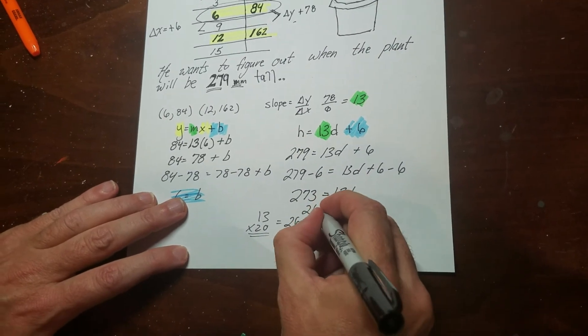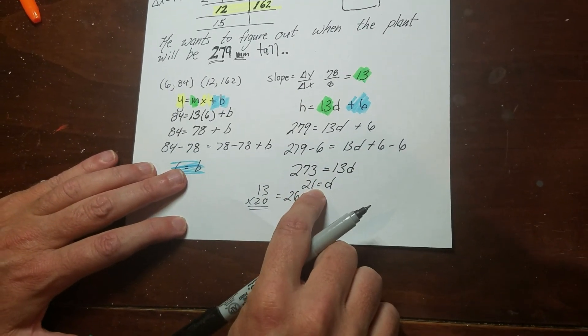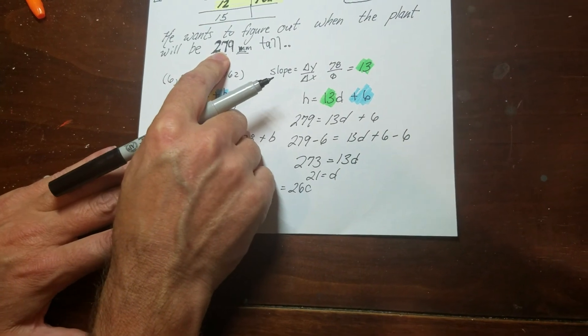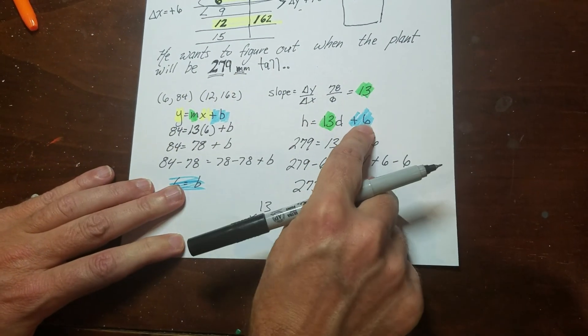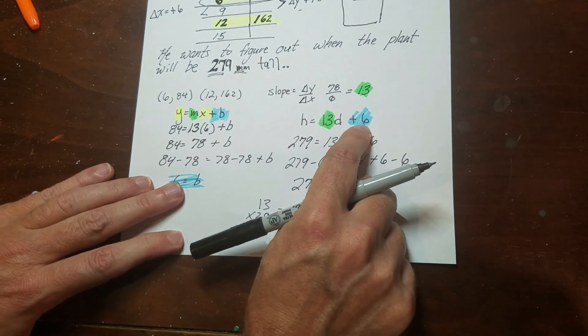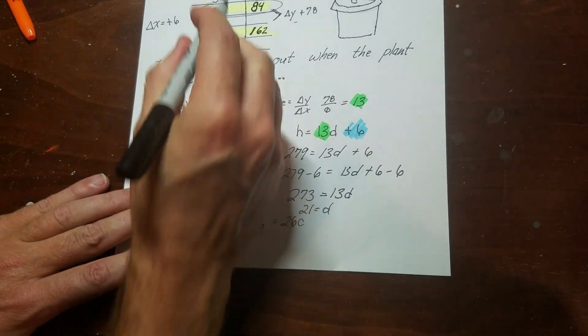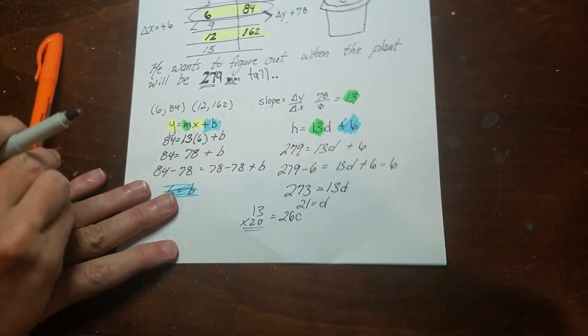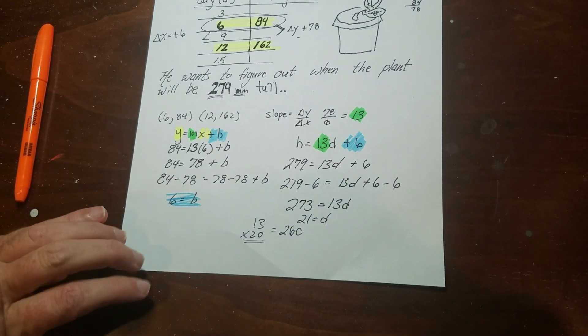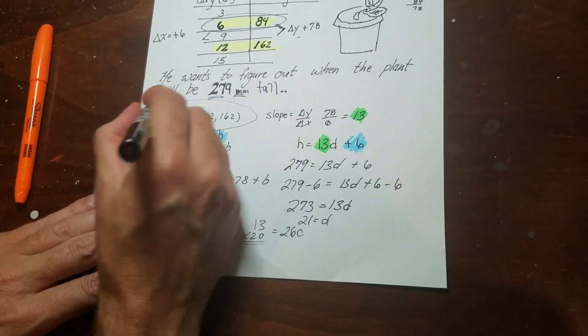So on day 21, the plant is going to be 279 millimeters tall. I know it was 6 millimeters tall when it was planted. If I wanted to, I could plug these numbers in to complete the table. But this is how you find the rule when you only have two points.